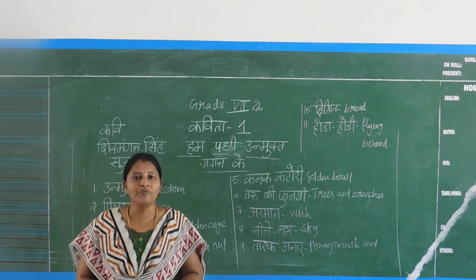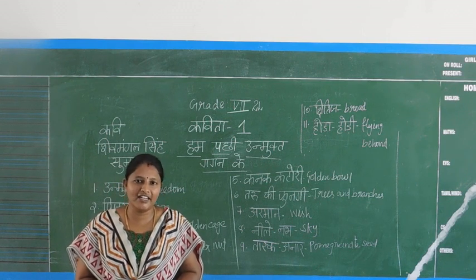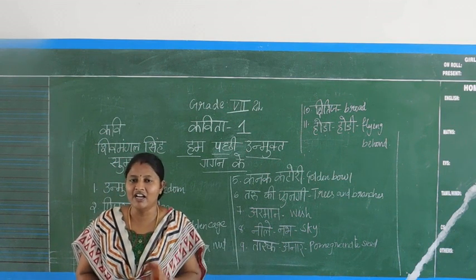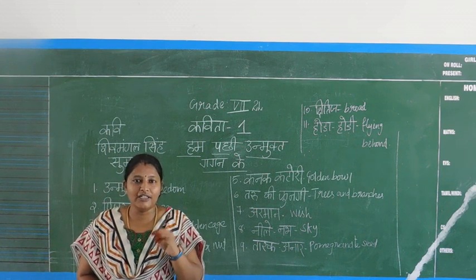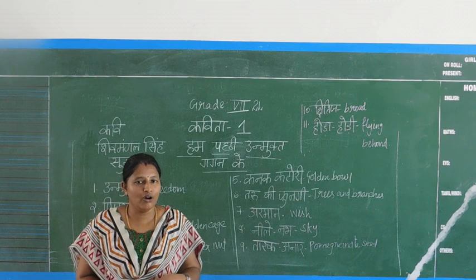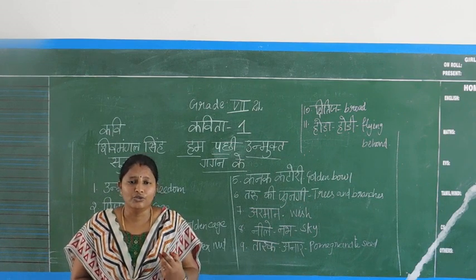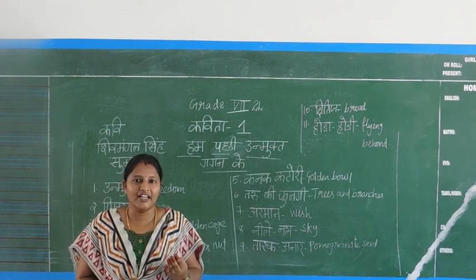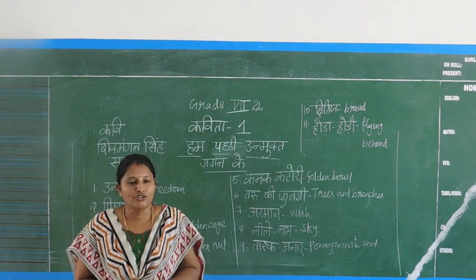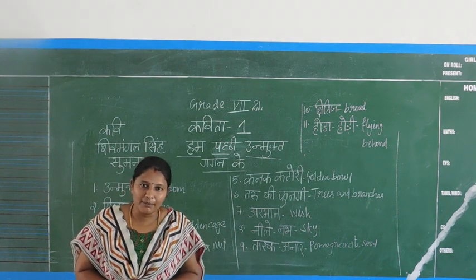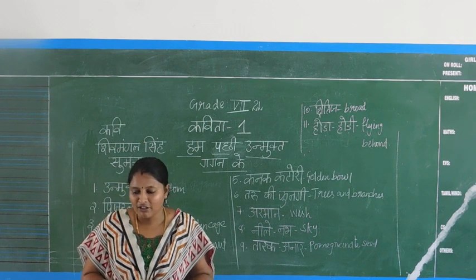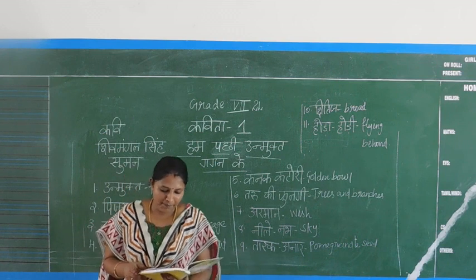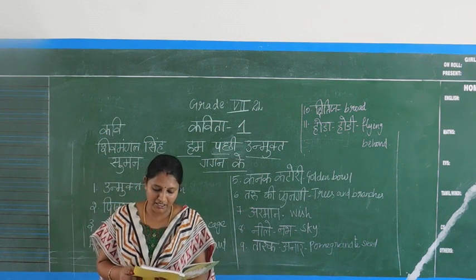The poet tells us that we should give birds their freedom and we should not put them inside a cage — pinjare mein mat rakhna chahiye. We should not take away their freedom. We should always allow birds to live in a free way. That is the main message of this poem.